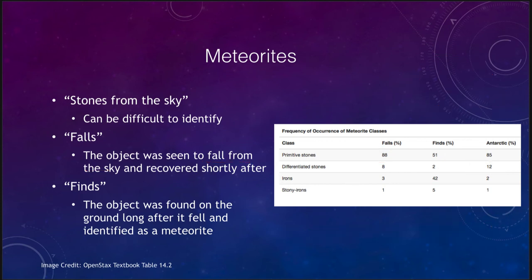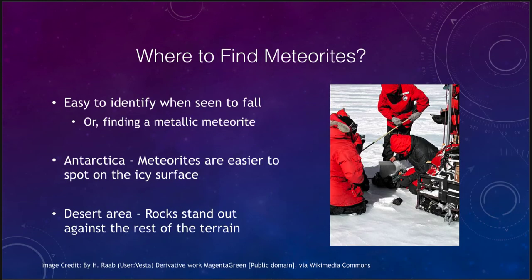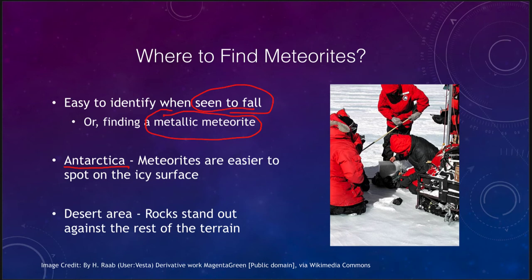Antarctica is one of the best places to find meteorites. First, if you see an object falling, you know it's a meteorite. When you find a metallic piece of rock, it tends to stand out and is more likely to be identified as a meteorite. In Antarctica or desert areas, meteorites stand out against the icy or sandy surface, making them much easier to identify. In a typical rocky area, a stony meteorite would not stand out from other rocks.